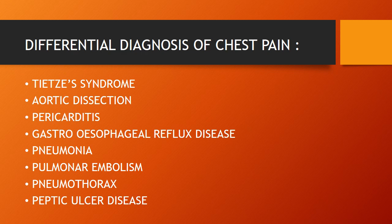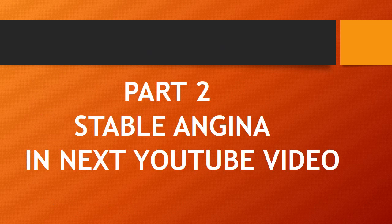Pneumonia presents with cough, sputum, hemoptysis, fever, and consolidation on chest X-ray. Pulmonary embolism — a deadly cause — presents with sudden-onset shortness of breath, tachycardia, tachypnea, and hypoxia. Pneumothorax presents with sharp pleuritic chest pain aggravated with inspiration and tracheal deviation on examination and chest X-ray, especially in tension pneumothorax. Peptic ulcer disease presents with epigastric discomfort; duodenal ulcer is relieved with food intake while gastric ulcer is aggravated with food. Don't forget to watch my next video on stable angina.